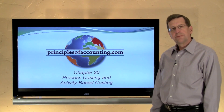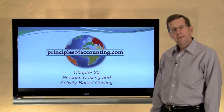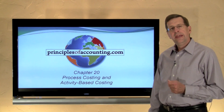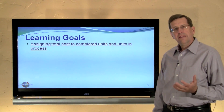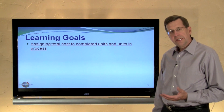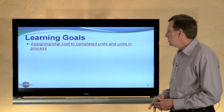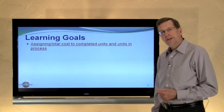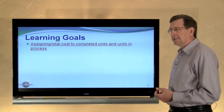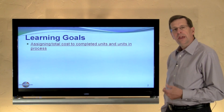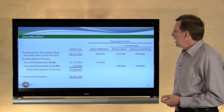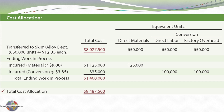I'm Larry Walther. This is Principles of Accounting.com Chapter 20, in which we are considering process costing and activity-based costing. This is the final module on process costing, and in this module we're going to carry forward information revealed in the previous two modules and look at assigning total cost to completed units and units in process. This is the final step in building up the cost of production report, so let's look at our cost allocation. If you have your textbook in front of you, you might follow along to see how the information is being carried forward.